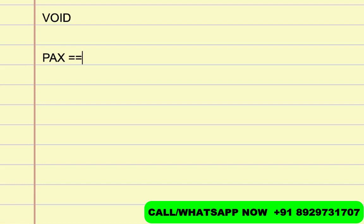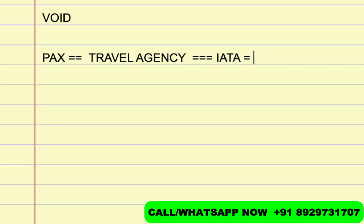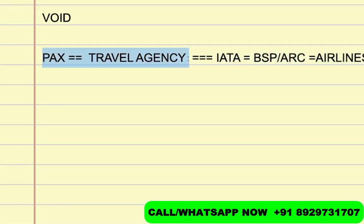Normally, a passenger pays the amount for the booking to the travel agency. The travel agency then makes a reservation and pays it to the airlines — but actually the money doesn't go to the airlines directly. It goes to IATA. IATA has two different organizations: one is BSP and one is ARC. IATA gives this money to these two depending on geographical boundaries, and then the money goes to the airlines.